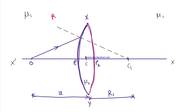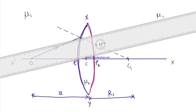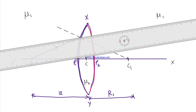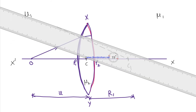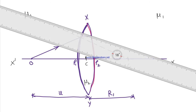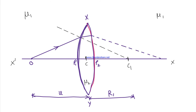Now, this is a rarer medium going into a denser medium. When a ray of light goes from rarer to denser medium, it bends towards the normal. So the ray bends this way and forms some image on the other side. Since we have not yet considered the second surface, this is a temporary image — shown by a dotted line — called i1. The distance from center C to this image i1 is v1.